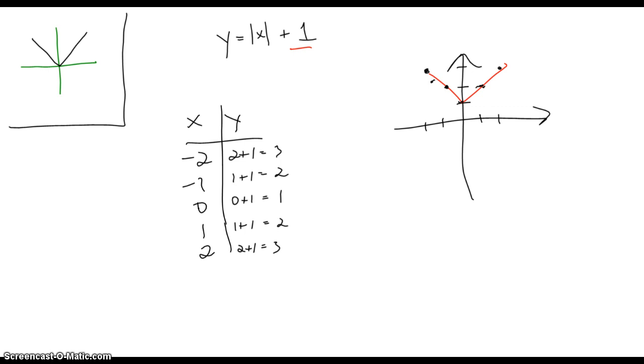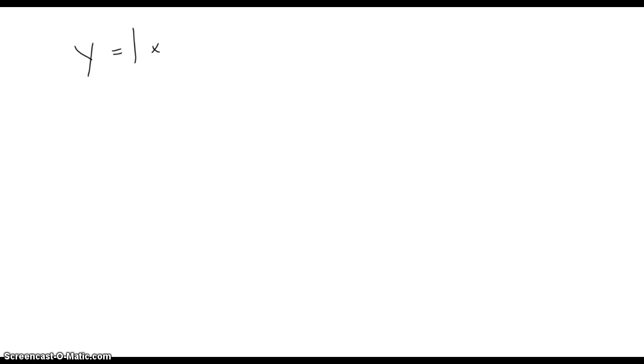So now let me give you a little statement that we can use. If we have a graph y equals the absolute value of x plus k, we take the graph of y equals absolute value of x and translate by k units up or down.